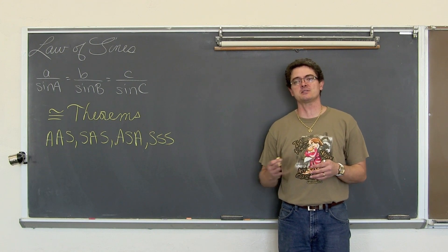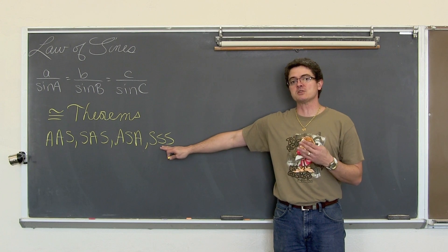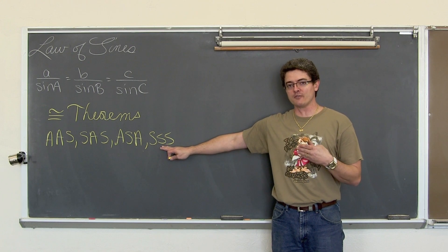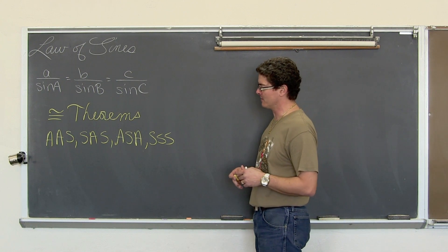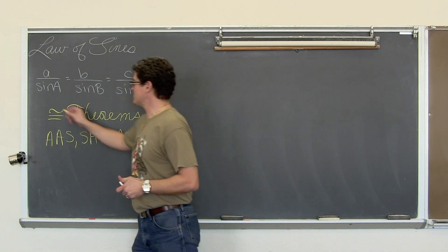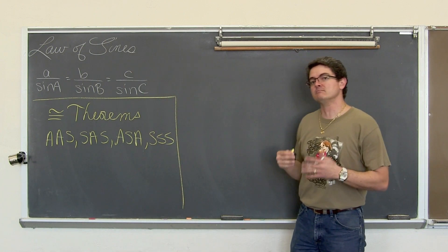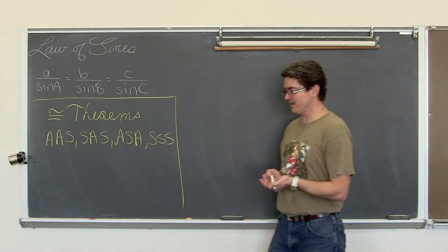We are not going to be proving two triangles are congruent. But we are going to have to look at the information given to us and see if it follows one of those four patterns. Not all four of these patterns are set up for Law of Sines either. Some of them will be Law of Cosines.